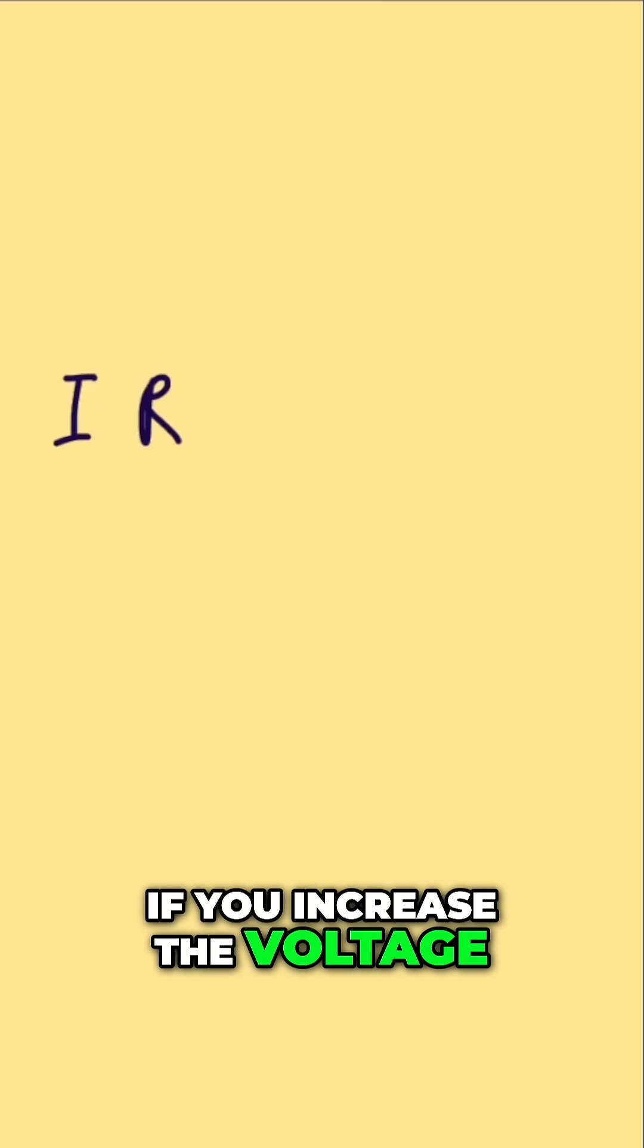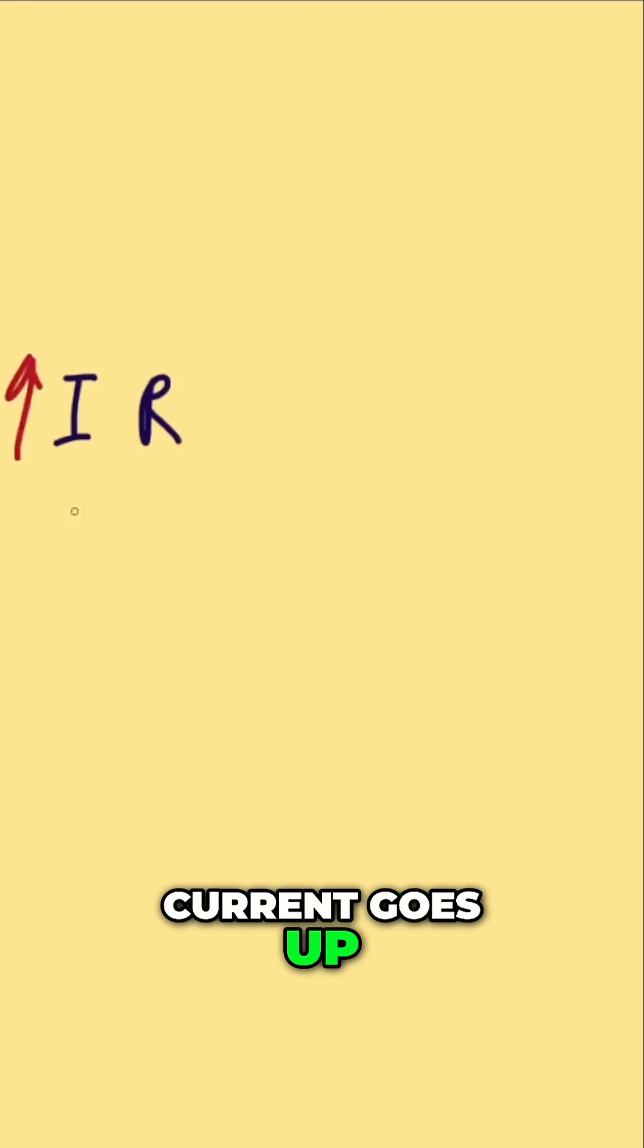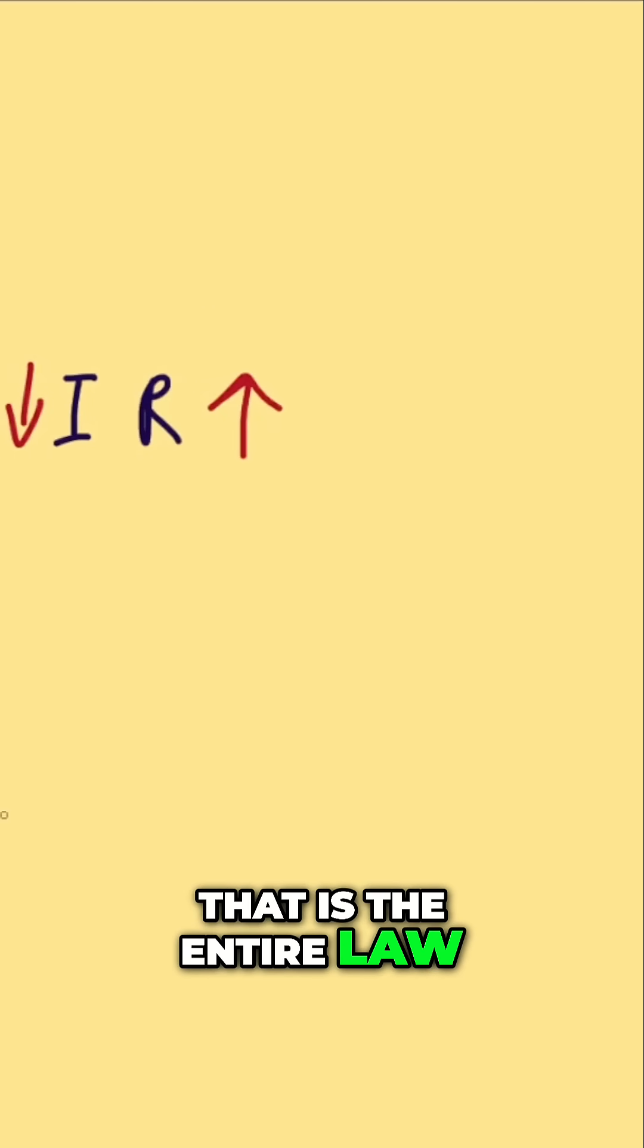It tells us that if you increase the voltage, the resistance stays the same, current goes up. If you increase resistance, current goes down. That is the entire law, but it explains literally everything in a circuit.